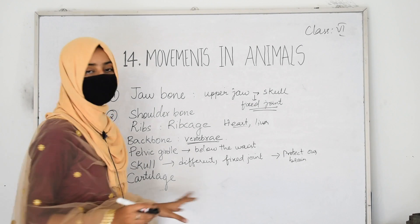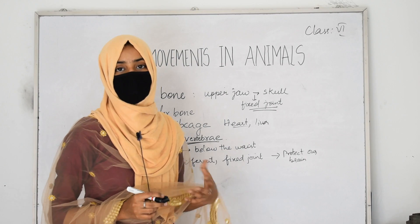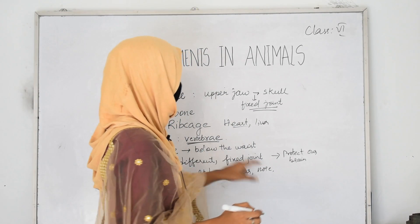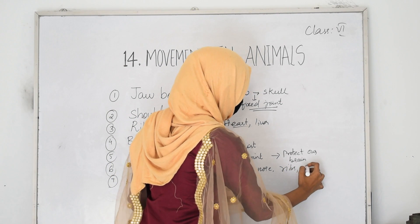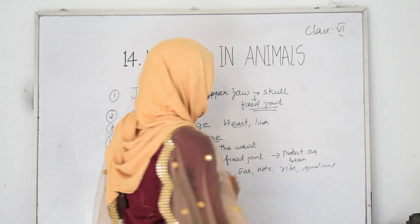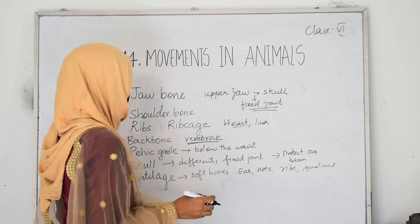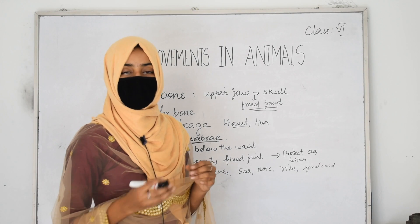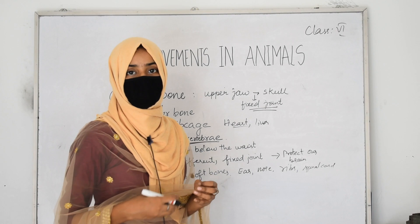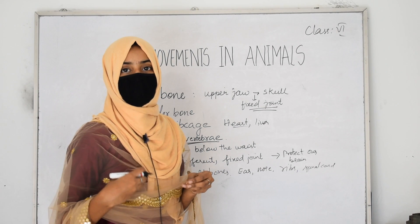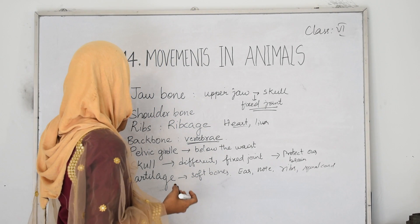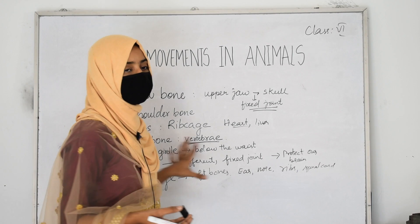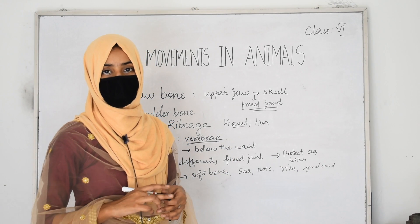The next type is cartilage. Cartilage is also a type of bone, but it is not hard — these are soft bones. Body parts like the ear, the tip of the nose, and the ribs, as well as the vertebrae of the spinal cord, are made up of the soft bone called cartilage. The different bones — jaw bone, shoulder bone, ribs, backbone (spinal cord), pelvic girdle, skull, and cartilage — all play a major role in movement.